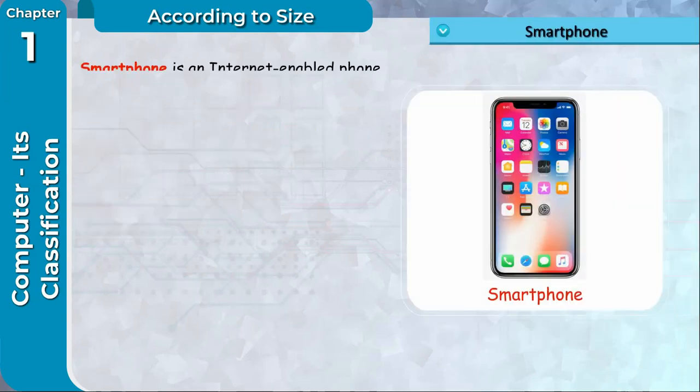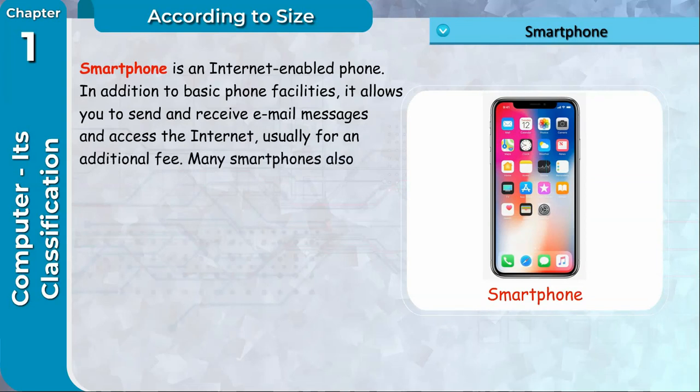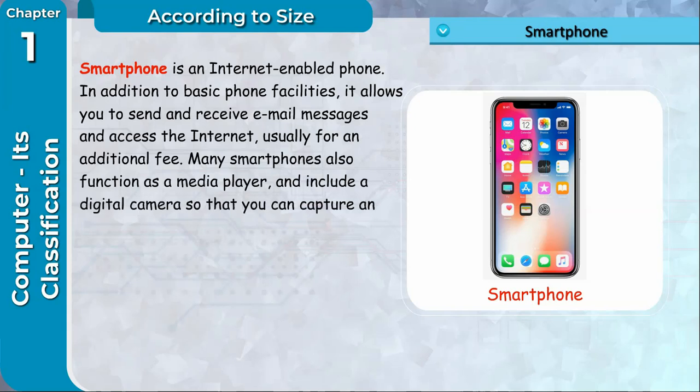Smartphone: Smartphone is an internet-enabled phone. In addition to basic phone facilities, it allows you to send and receive email messages and access the internet, usually for an additional fee. Many smartphones also function as a media player and include a digital camera so that you can capture an image and share it with others.